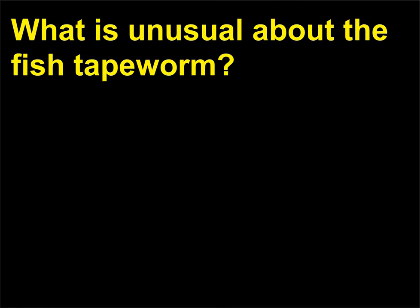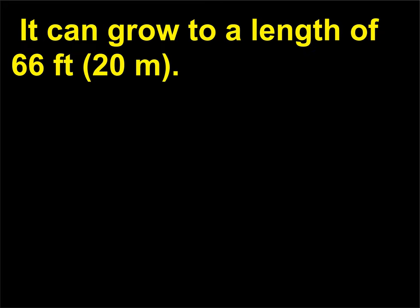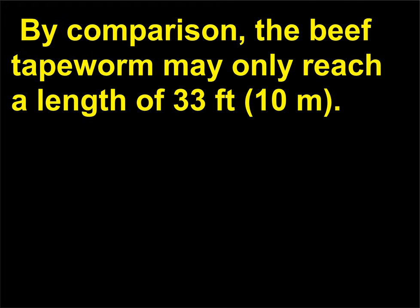What is unusual about the fish tapeworm? The fish tapeworm is the largest cestode that infects humans. It can grow to a length of 66 feet, or 20 meters. By comparison, the beef tapeworm may only reach a length of 33 feet, or 10 meters.